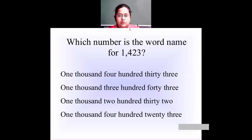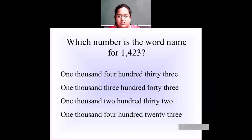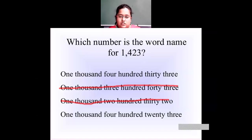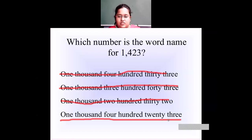Which number is the word name for 1,423? In thousands place I have one, so it will be one thousand — all four options have one thousand. In hundreds place I have four, so that will be four hundred. The second and third options can be eliminated because they don't have four hundred — they have two hundred and three hundred. Now comparing the remaining options: in tens place I have two — that's twenty — and in one's place I have three. So the first option is out because it shows thirty-three. The answer is one thousand four hundred and twenty-three.